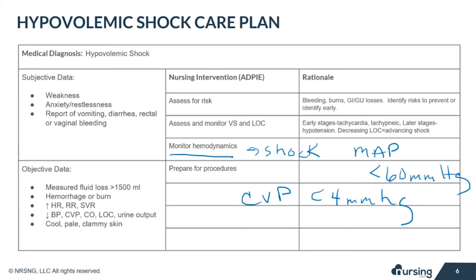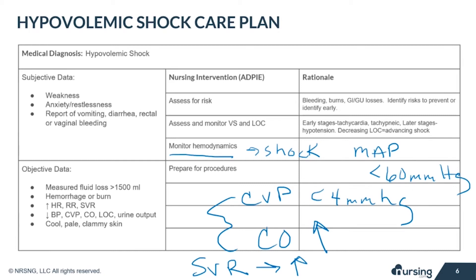The goal is to see CVP as well as cardiac output increase with treatment. Cardiac output may be normal for a while until the body's compensatory mechanisms begin to fail, and is assessed with a flow track or PA catheter. Systemic vascular resistance, or SVR, measures the afterload. We expect this to be high because of vasoconstriction, which is a compensatory mechanism. If fluid resuscitation is effective, we will see this value return to normal.